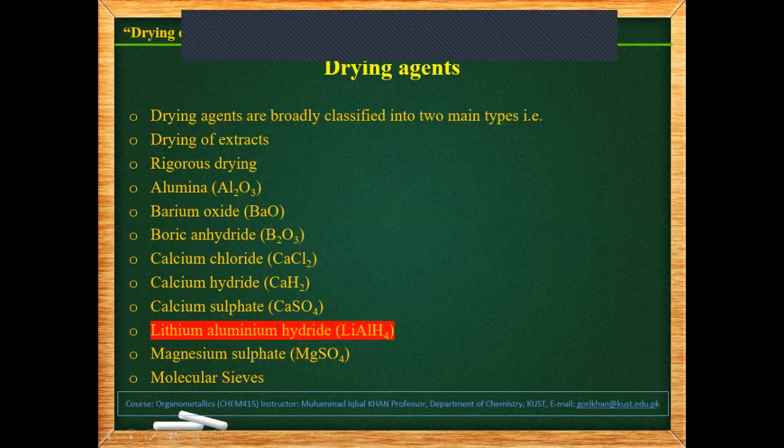In organometallic chemistry, rigorous drying of a solvent means we have to make sure there is no moisture inside the solvent, even at a micro trace level. After general-purpose drying, solvents usually still contain moisture at a trace level, which is not acceptable for organometallic work. These are the different types of drying agents which are actually used for rigorous drying.